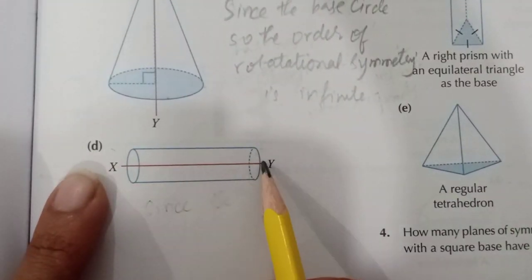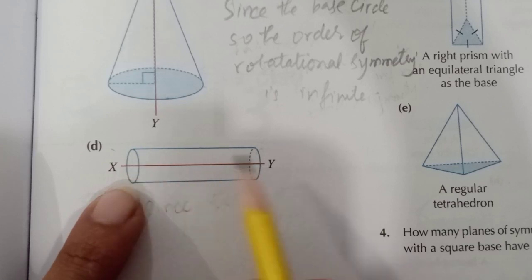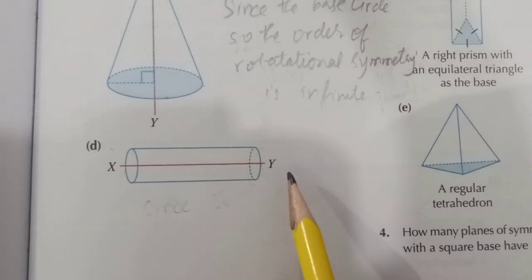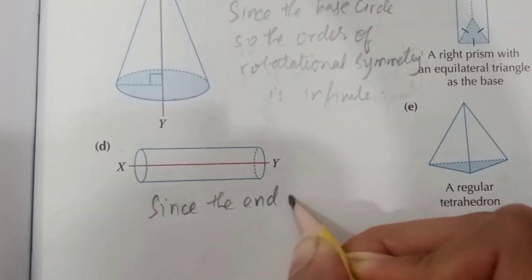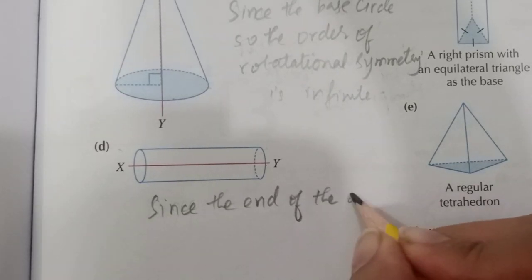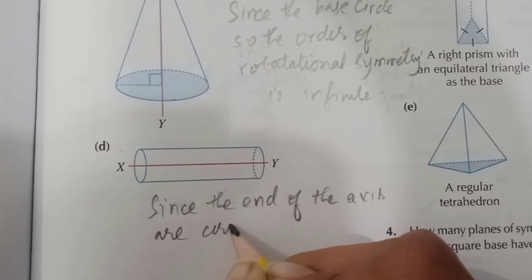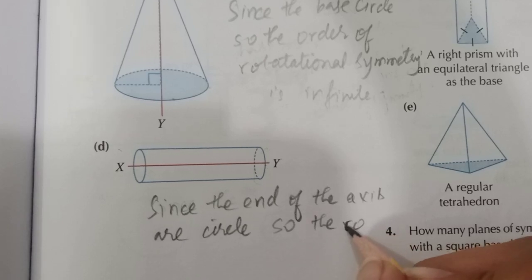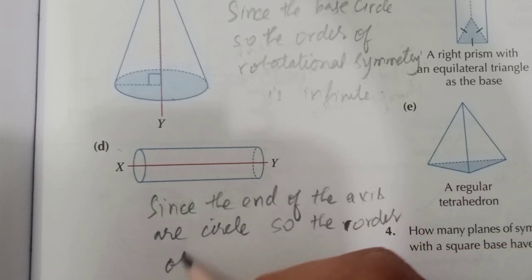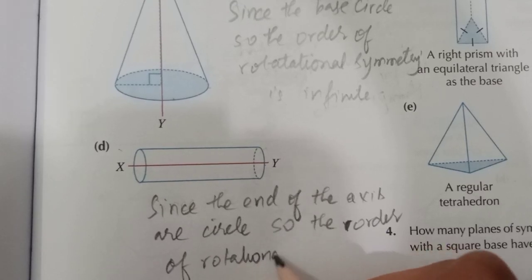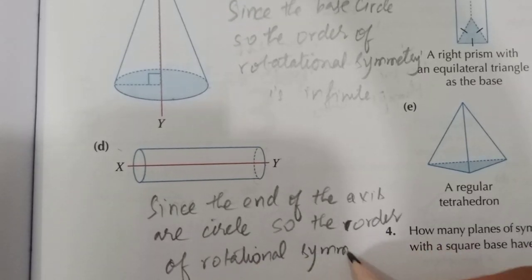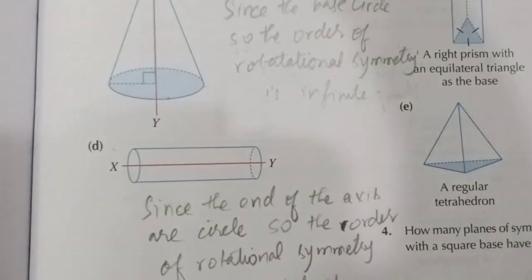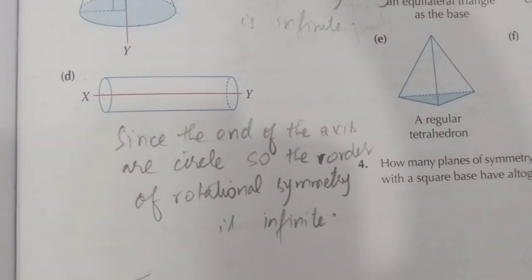Part D also has a circular base and an axis through the middle, so the order of rotational symmetry is again infinite. Question number two is now done.